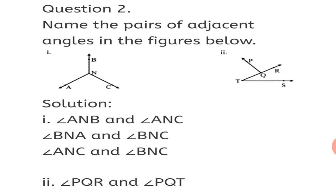Now taking arm NB, the adjacent pair is Angle BNA and Angle BNC. Then taking the third common arm NC, the adjacent angles are Angle ANC and Angle BNC. So you should get 3 pairs of adjacent angles as your solution to Question 2, sub-question 1.